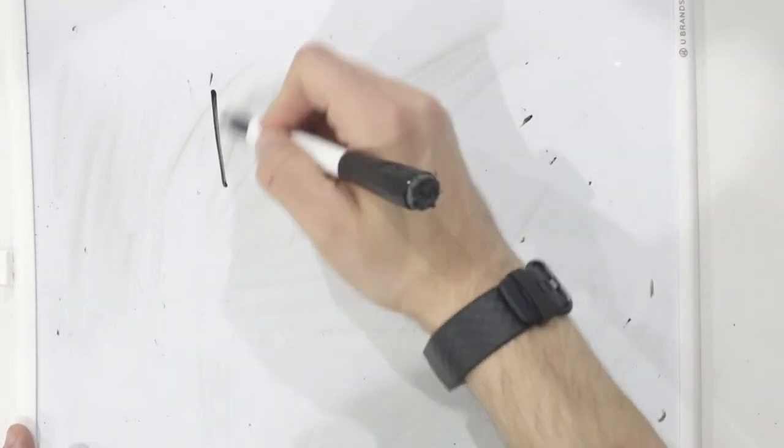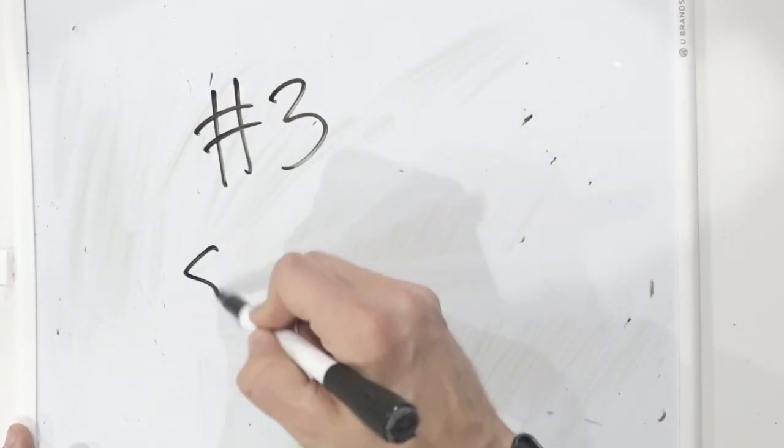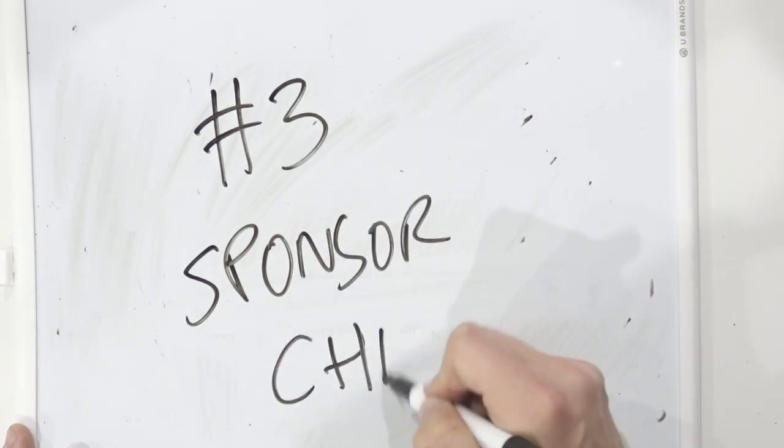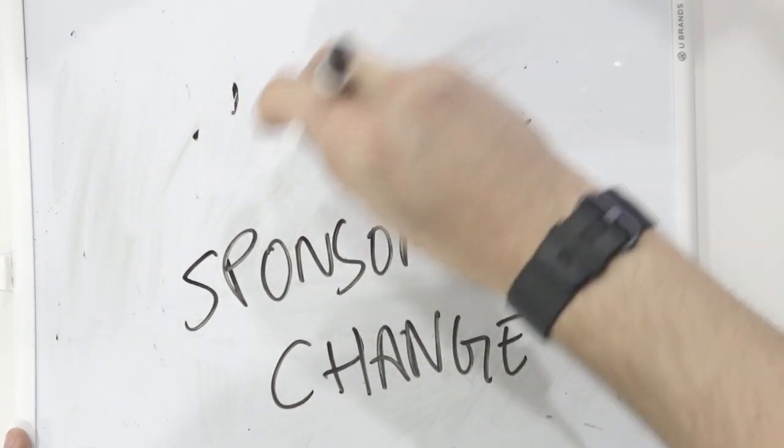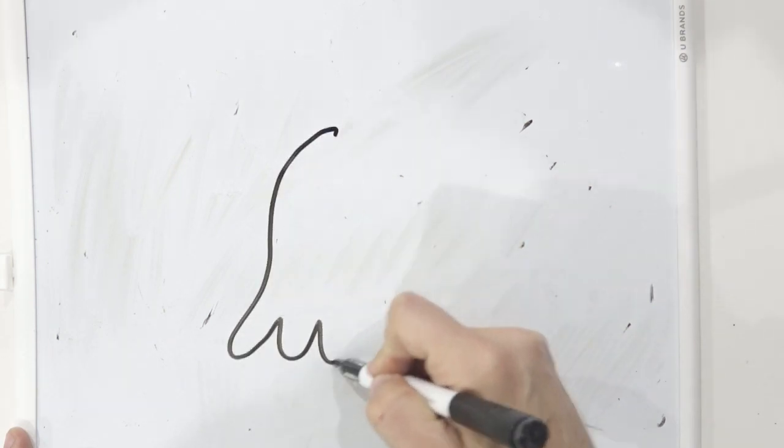Number three, sponsor change. Not everyone who works at your company cares equally about your product. You'll have casual users, power users, champions, stakeholders, people who don't know about you at all. If your buyer, admin, or power user leaves the company, you're in big trouble. Telltale signs? Your key contact goes dark.